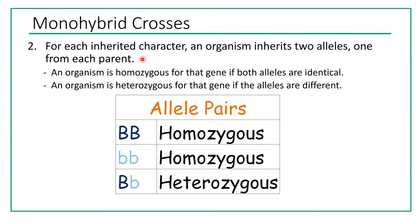The second hypothesis: for each inherited character, an organism inherits two alleles — one from each parent. If both alleles are identical, the organism is homozygous for that gene (either homozygous dominant or homozygous recessive). If the alleles differ, the organism is heterozygous for that gene. For example, one could be homozygous for hair color and heterozygous for eye color — but for each gene you are either homozygous or heterozygous.